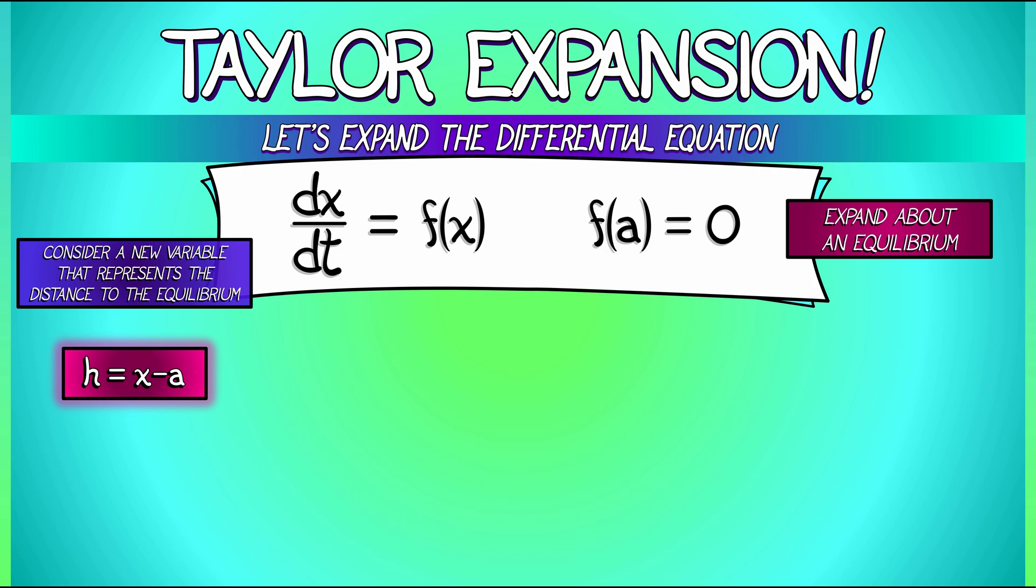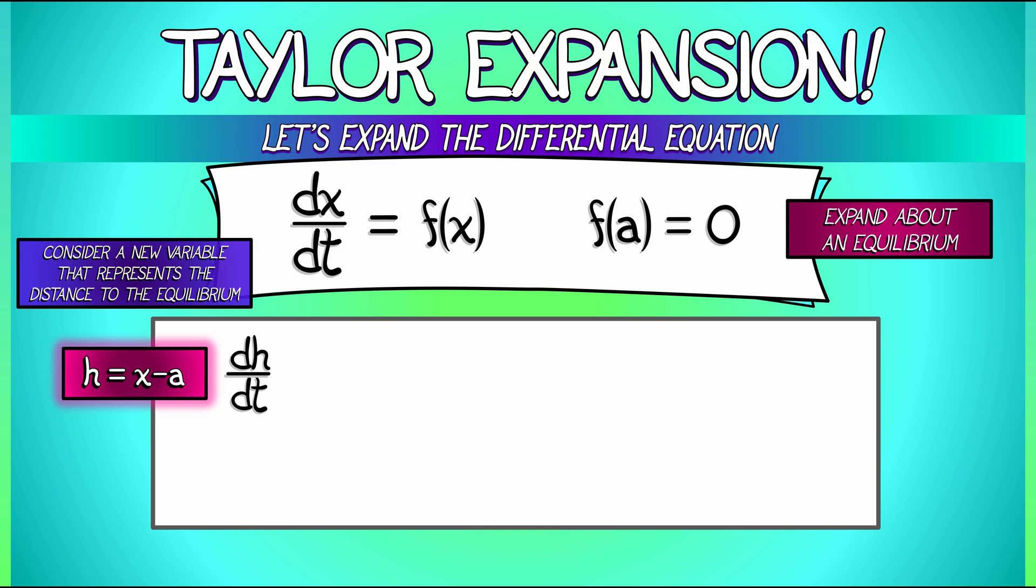h is going to be a function of t. It's going to evolve over time. How does that perturbation evolve? What is dh/dt? Differentiation is a linear operator. And h equals x minus a. So dh/dt equals dx/dt minus da/dt.